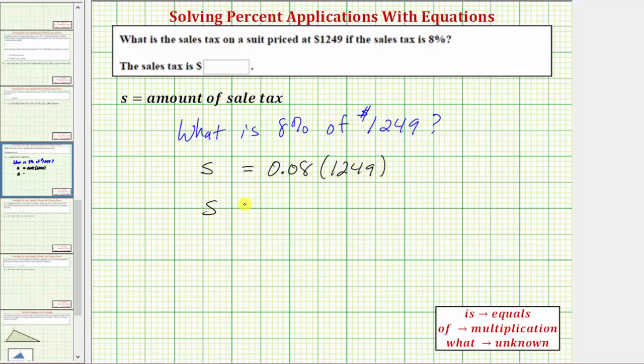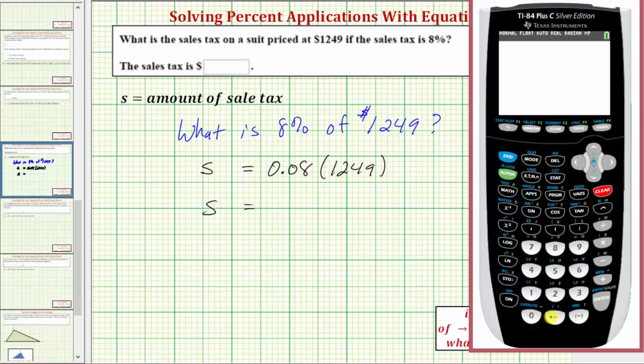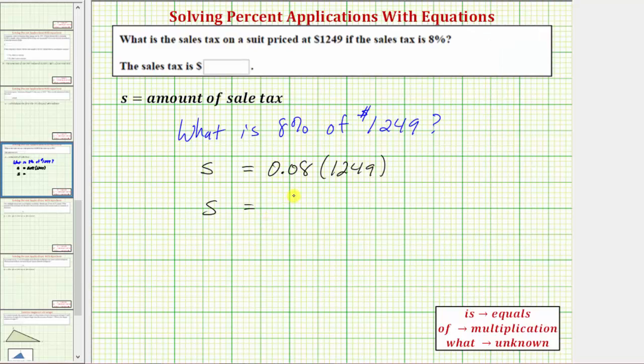And now we'll go to the calculator to determine this product. We have 0.08 times 1,249, which gives us 99.92, which means the sales tax is $99.92.